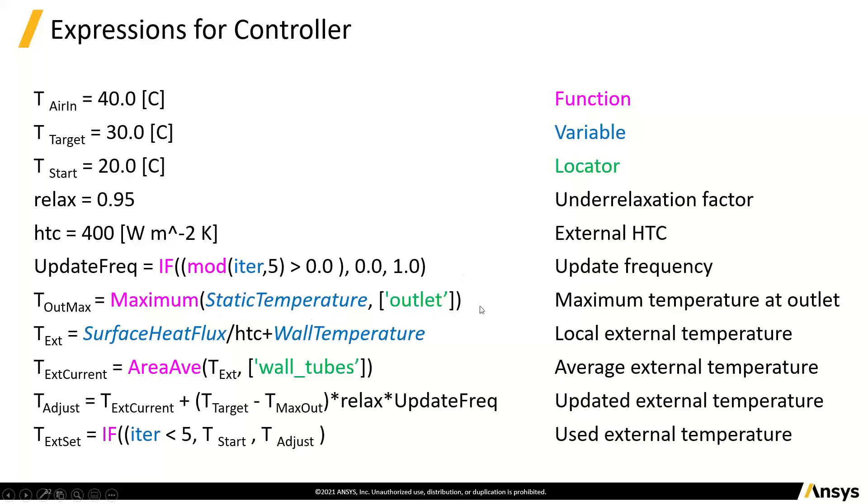This is the maximum outlet temperature that we're shooting for. So the target we want is the maximum static temperature at the outlet. This is what the external temperature needs to be on the wall. If we've got the surface heat flux, then we divide that by the heat transfer coefficient. That gives us the delta T. We add this one on the right-hand side to get the T external.